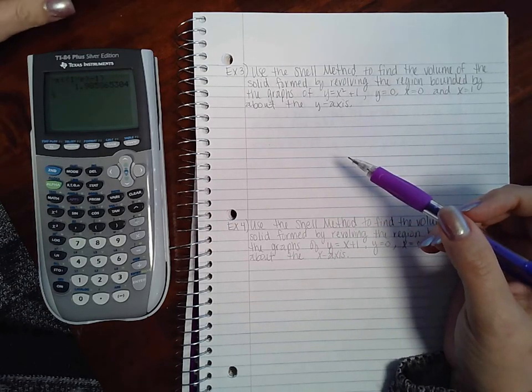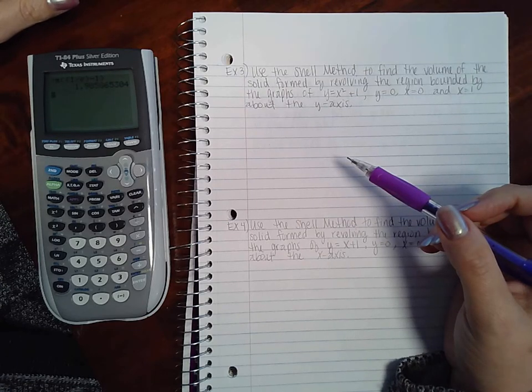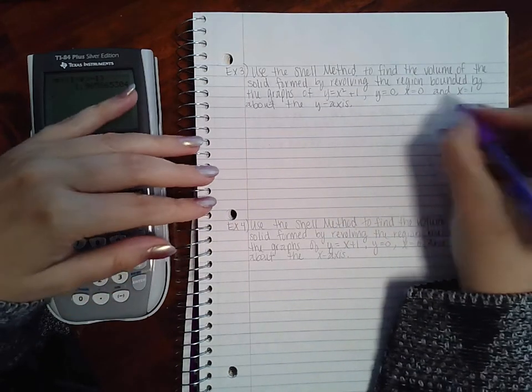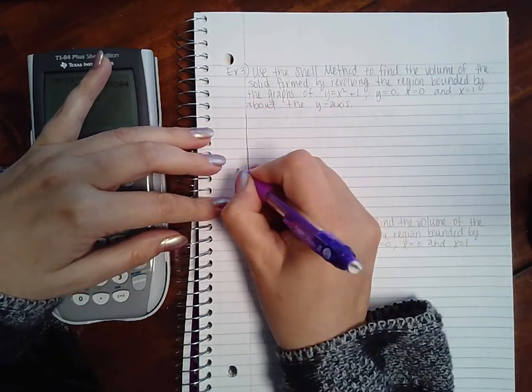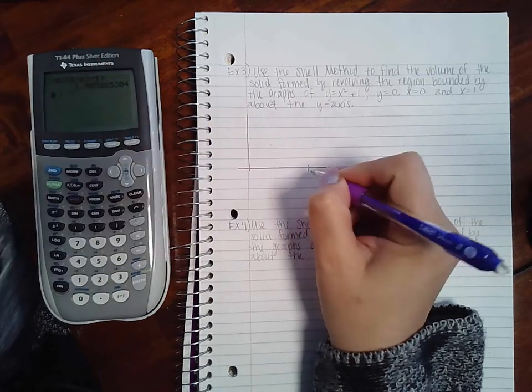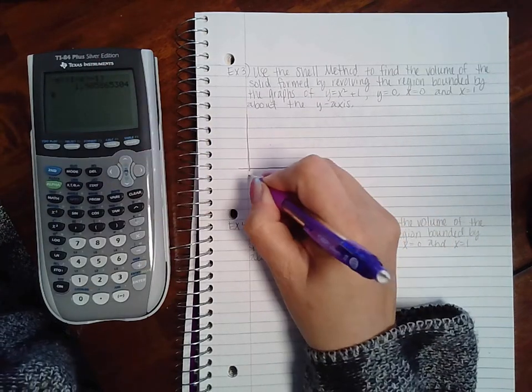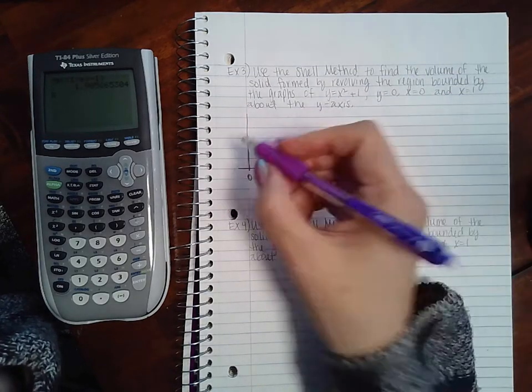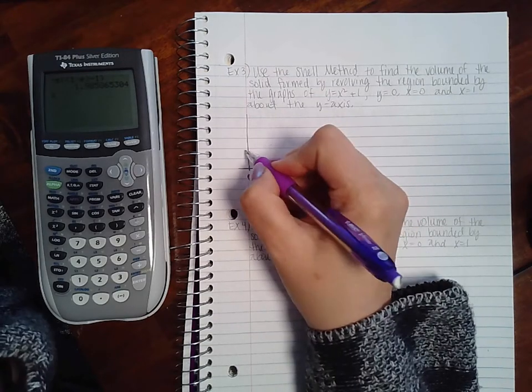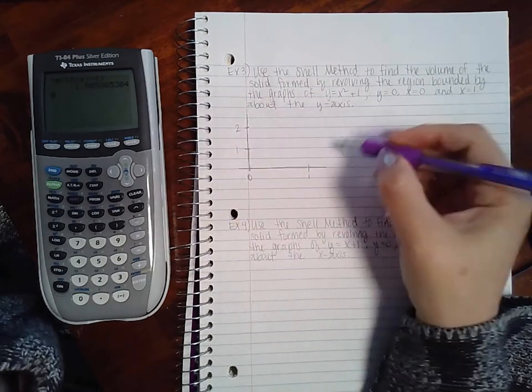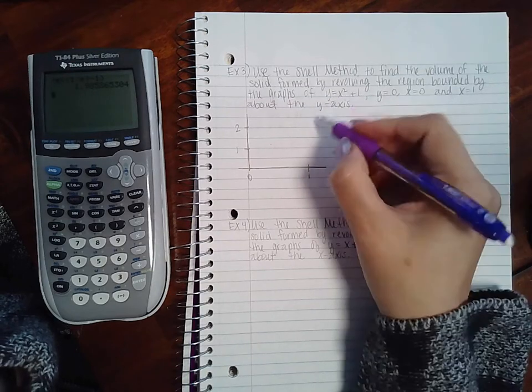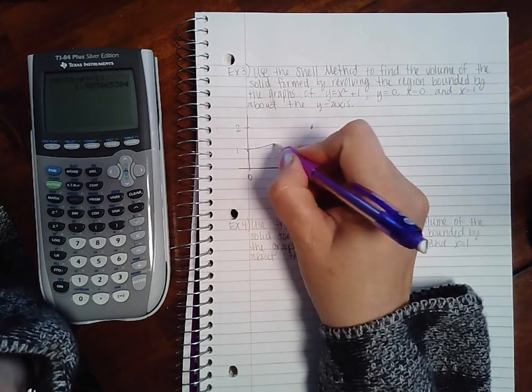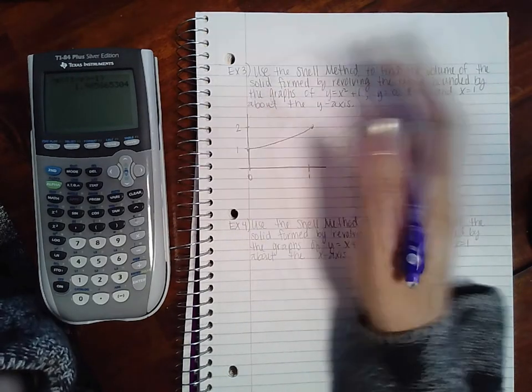So let's see what all of that looks like. When I plug in 0, I'll get 1. And when I plug in 1, I'll get 2. And it is a squared function, positive, so it should open up this way.